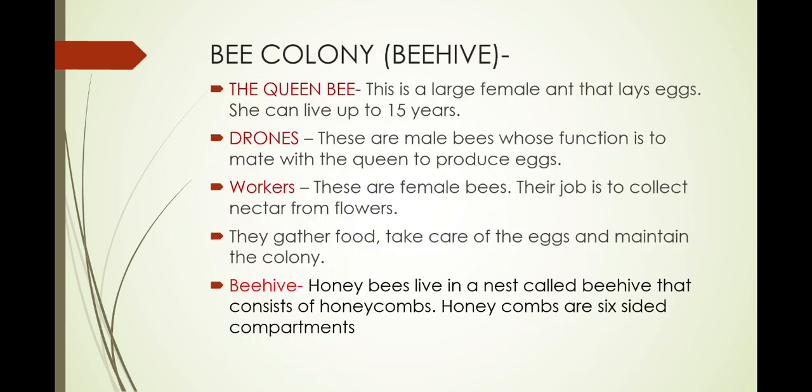Next is the bee colony or beehive. Bees are very useful insects. They produce honey which is used as a sweetening agent and antiseptic. They also produce beeswax which is used to make candles, cosmetics and adhesives. Bees show highly organized social behavior. They live in a nest called a beehive, which consists of honeycombs. Honeycombs are six-sided compartments.